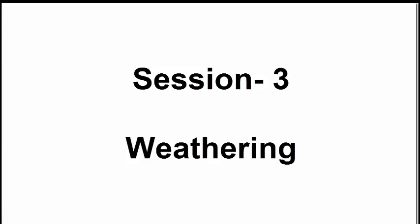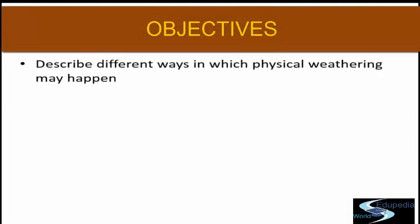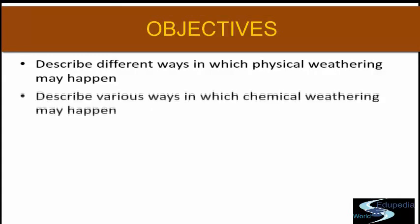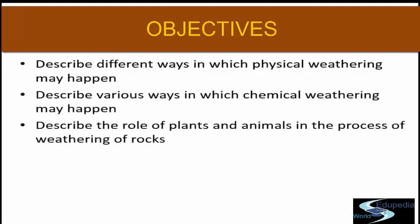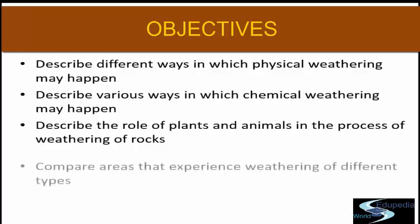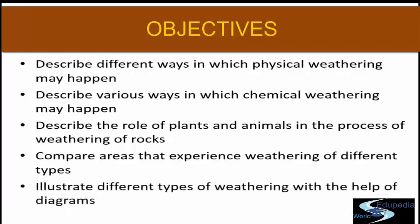In this session, we are going to learn in detail about different types of weathering. We are going to achieve the following objectives: describe different ways in which physical weathering may happen; describe various ways in which chemical weathering may happen; describe the role of plants and animals in the process of weathering of rocks; compare areas that experience weathering of different types; and illustrate different types of weathering with the help of diagrams.